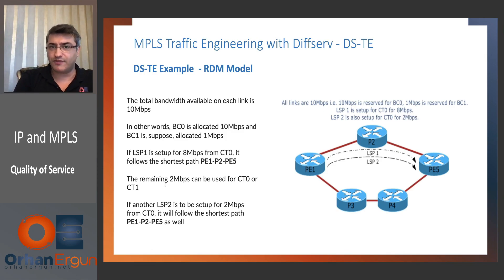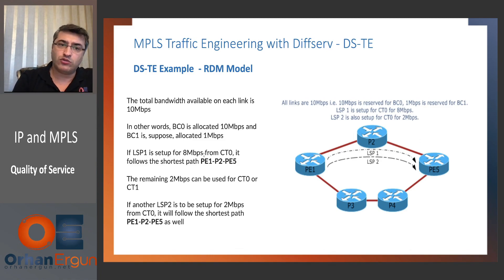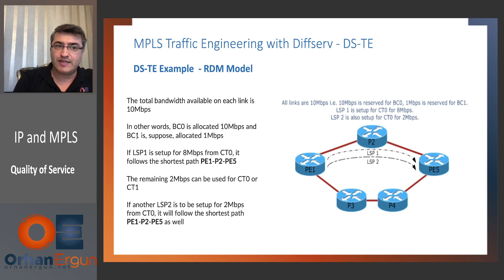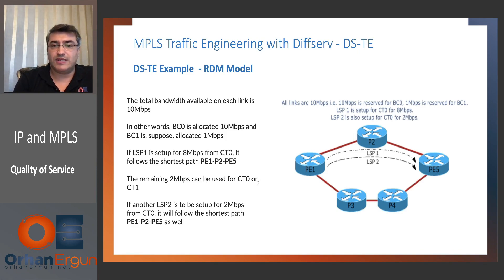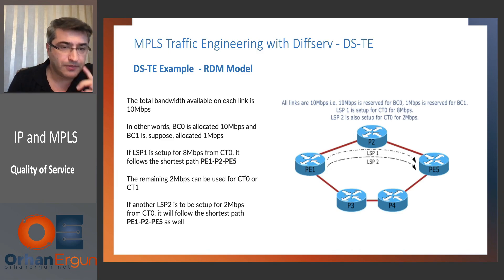This is the most important point — the difference between RDM and MAM. Because BC0 is allocated 10 MB, CT0 and CT1 can both use those 10 MB. With 8 MB allocated from CT0, if 2 MB CT0 or 1 MB CT1 comes, it can use the top path. But you cannot bring 2 MB CT1, because BC1 is equal to CT1 up to CT7 and is limited to 1 MB maximum.